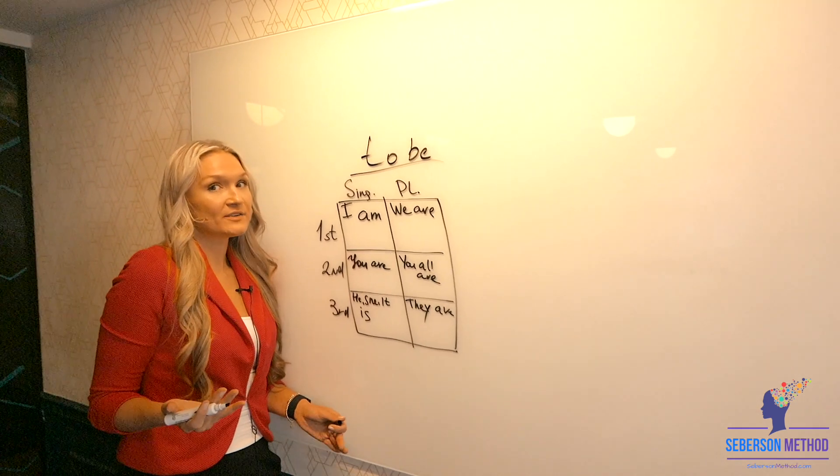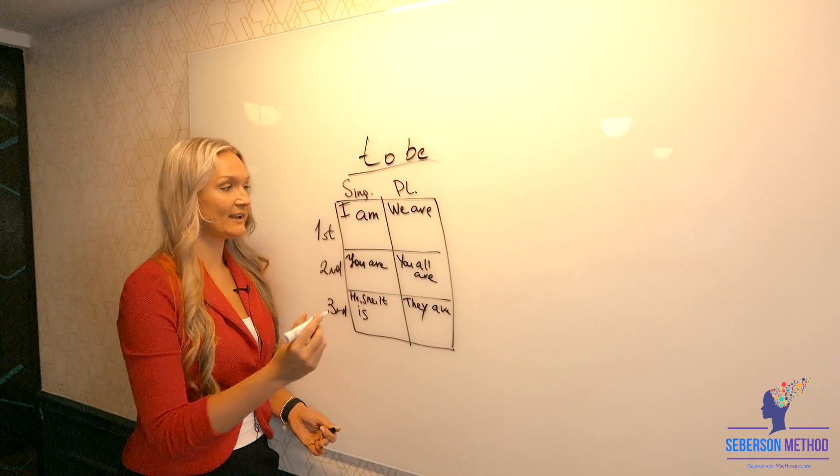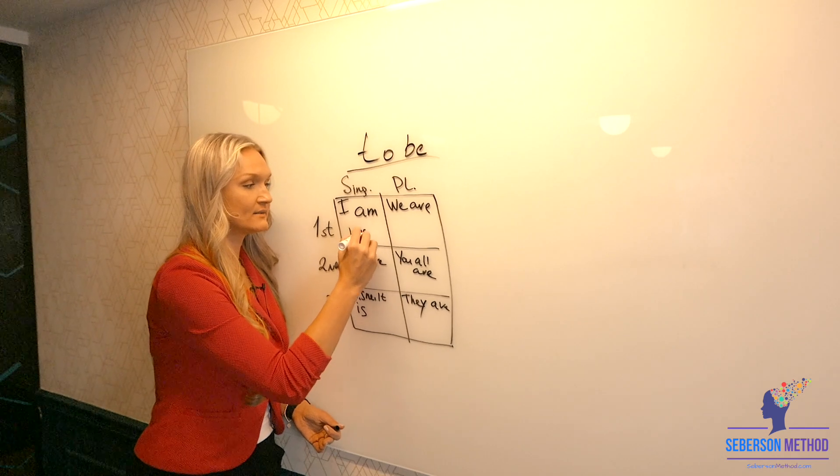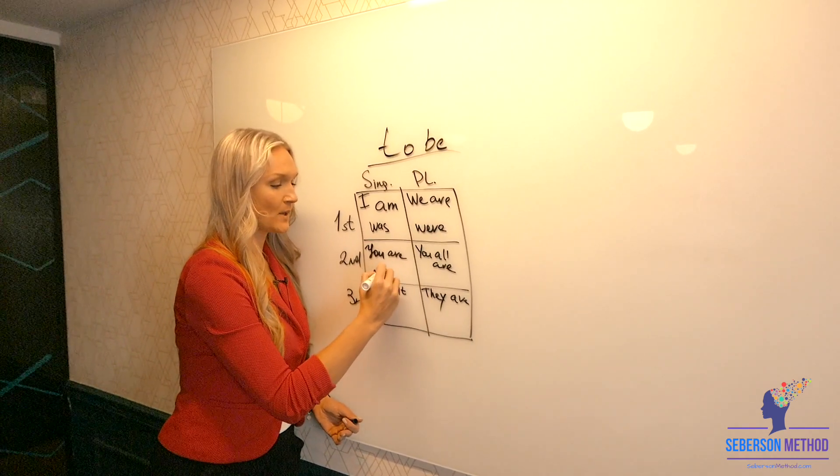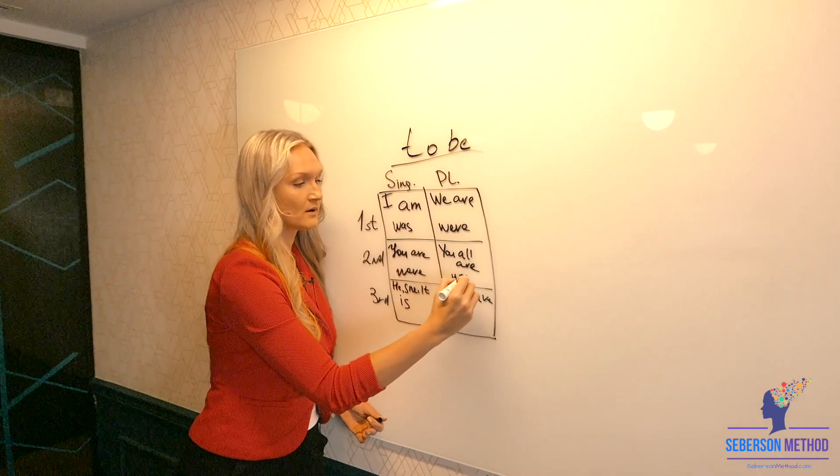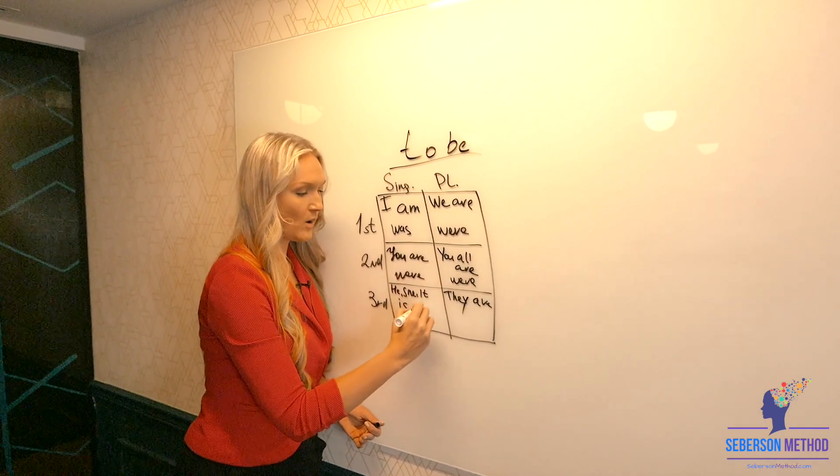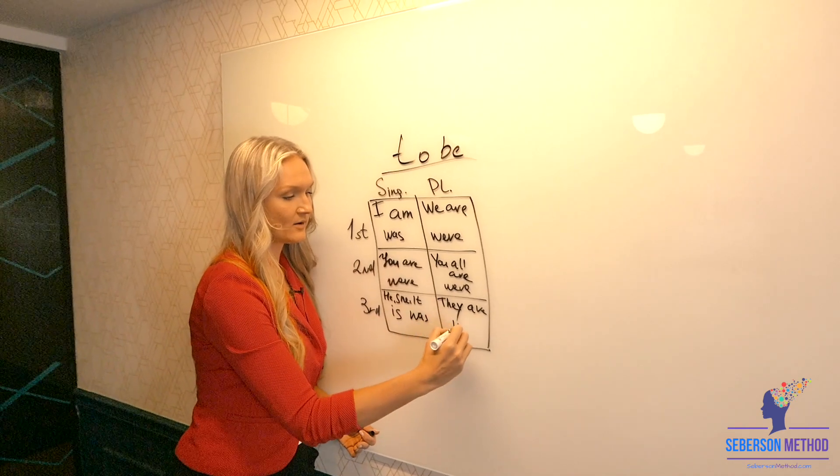Now what would to be verb sound like in the past? I was, we, were, you, were, y'all, were, he, she, it, was, they, were.